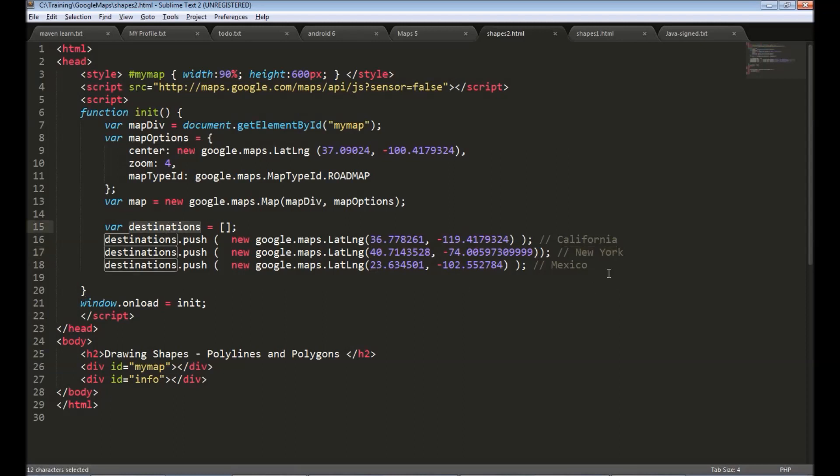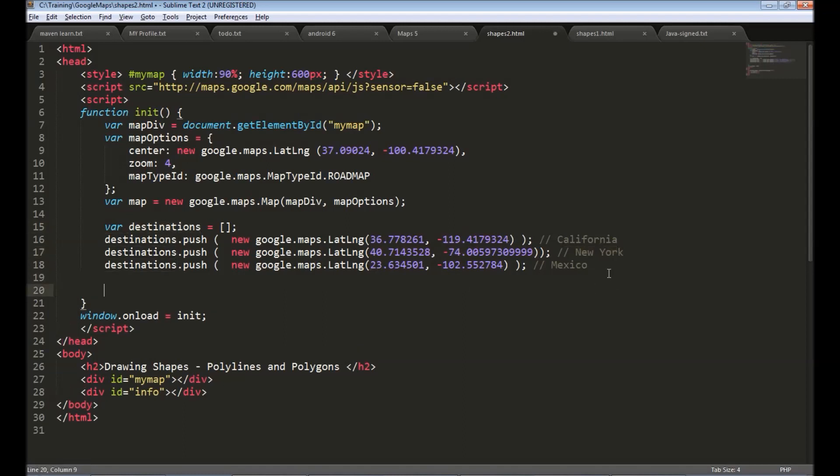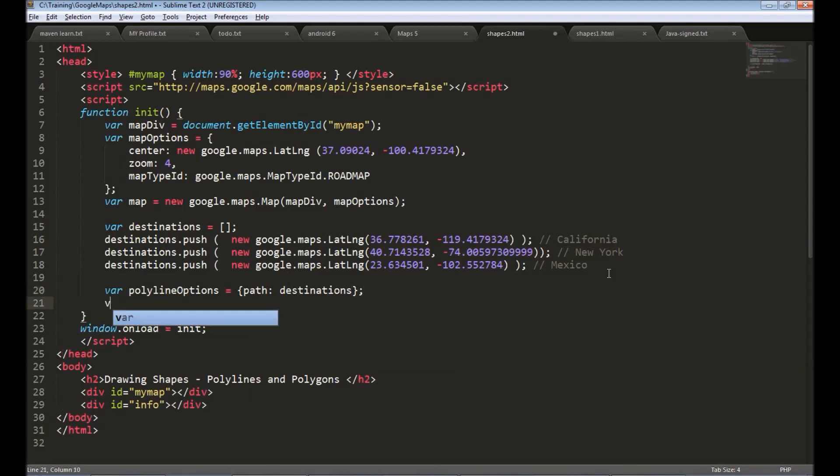So I have an array of lat long objects. The next step is to create polyline object before that we will define polyline options. This is a key value map. So I will give path equals to the destinations array. Next step is to create the polyline object. Google.maps.polyline and pass these options.